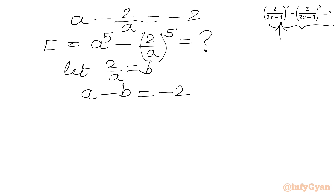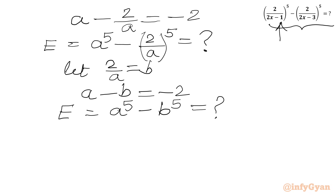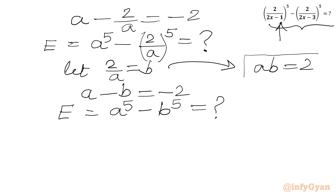The required expression to evaluate is A⁵ - B⁵, where B = 2/A. So we can write B⁵ in place of (2/A)⁵. From this we also note AB = 2, which will make the calculations and steps easier.